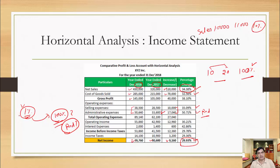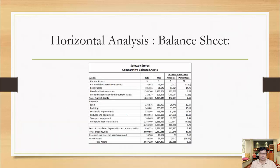So vertical analysis tells you what is happening within the year; horizontal analysis tells you what is happening over a period of time. In the balance sheet we do the same thing — for 2019 and 2018 we check how much the increase or decrease is by amount and by what percent. In horizontal analysis, we look at both absolute figures and percentage figures.